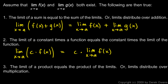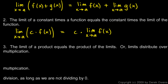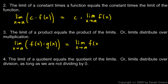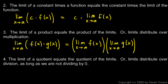Number three: the limit of a product equals the product of the limits. The limit as x approaches a of f(x)·g(x) equals the limit as x approaches a of f(x), times the limit as x approaches a of g(x). You can think of the limit as distributing over the multiplication — the limit of f(x) times the limit of g(x).